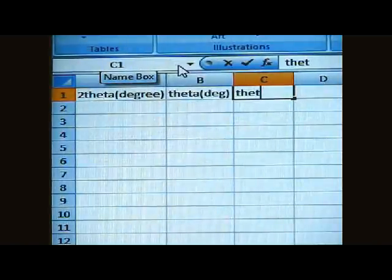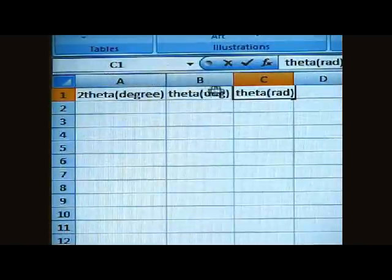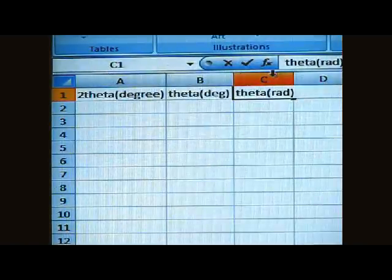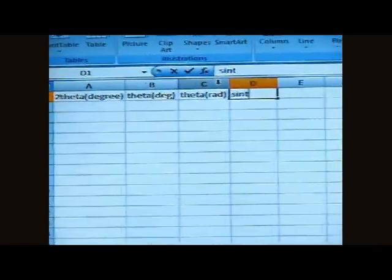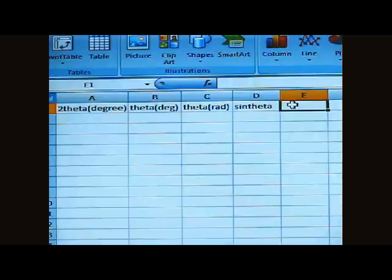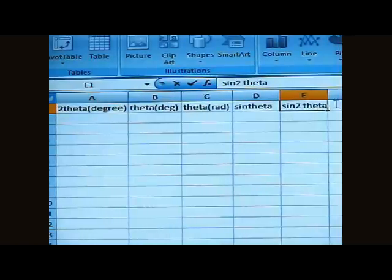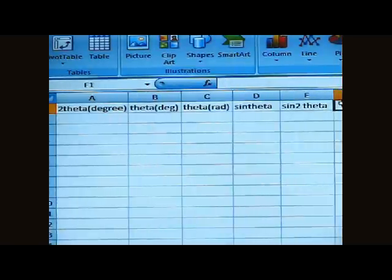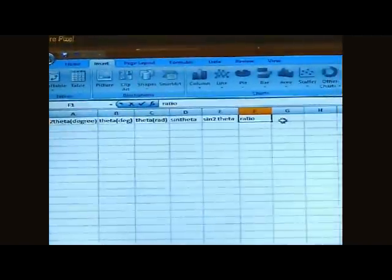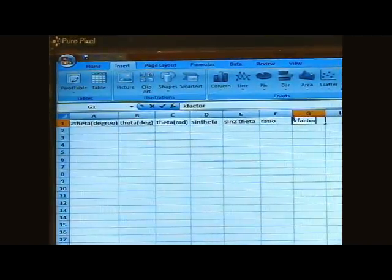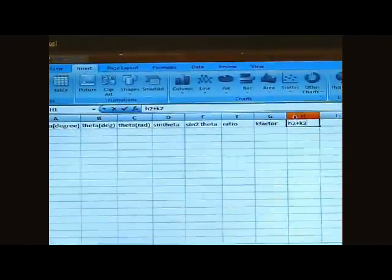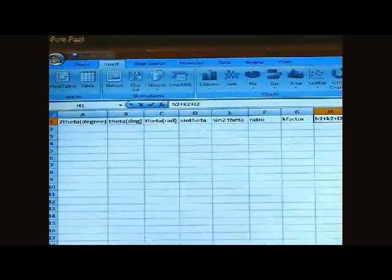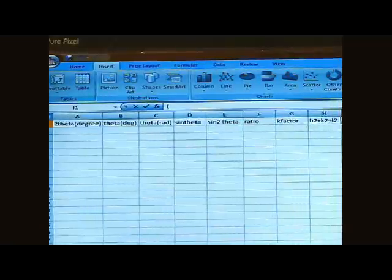In third column, theta in radians. Now the fourth column, it is sine theta. Next column, sine squared theta. Next is ratio. Other one is K factor. Next is h squared plus k squared plus l squared. Next one is HKL.